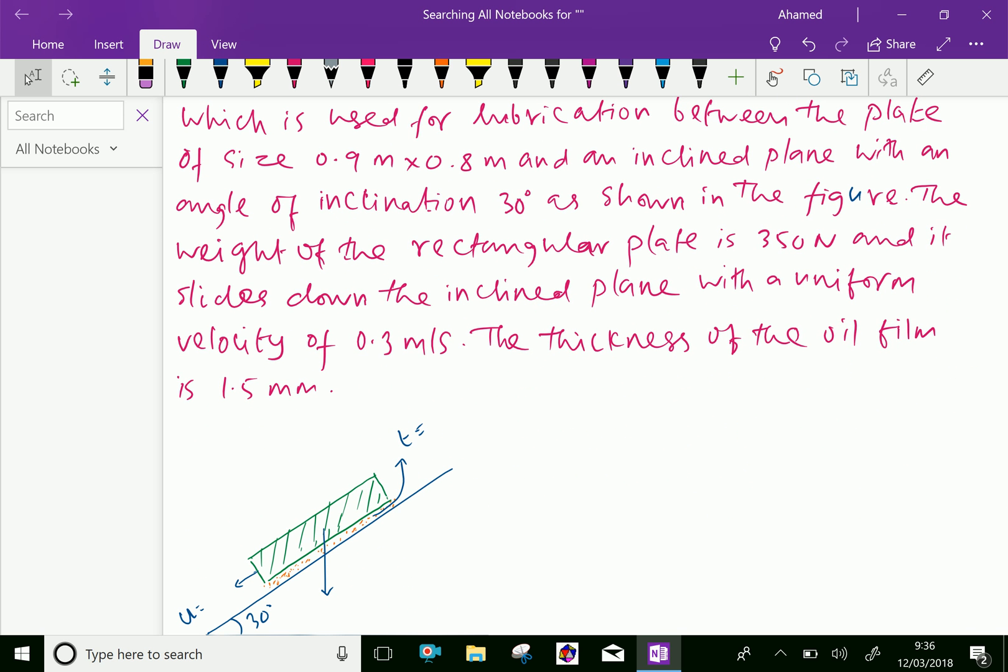The weight of the rectangular plate is 350 Newton and it slides down the inclined plane with a uniform velocity of 0.3 meter per second. The thickness of the oil film is 1.5 mm.